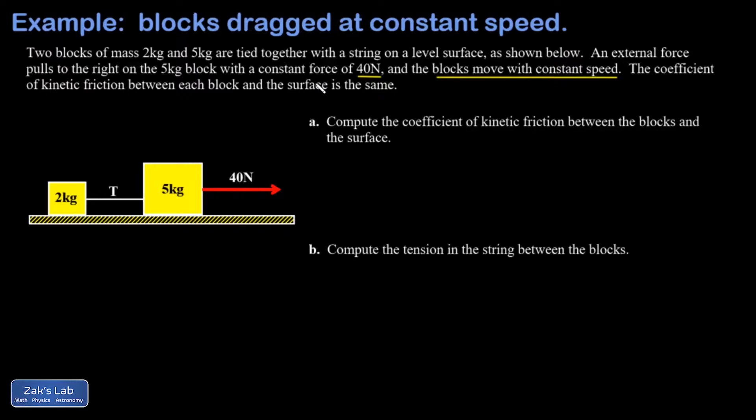In part a we're asked to compute that coefficient of kinetic friction between the blocks and the surface. We'll begin by diagramming forces on each of these objects. I have the force of gravity downward on the 5 kilogram block, that's given by mg, so 5 times 9.8, and that comes out to 49 newtons.